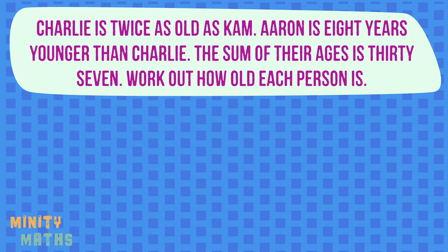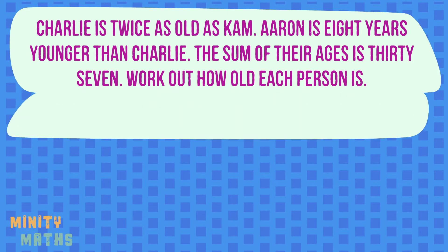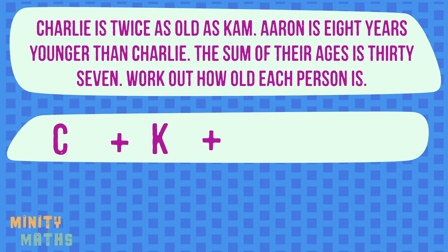Now let's solve a more complex problem — this one uses ages. Firstly we can write out an equation to represent the sum of their ages by using the initials of each person's name to represent their age. However we can't solve this equation when it is written like this because we have too many variables, so we need to rewrite their ages using the information given to us in the question. We need to make sure we end up with only one variable. Underlining the key points in the question can help you to pick out the clues needed to write an expression for each age.